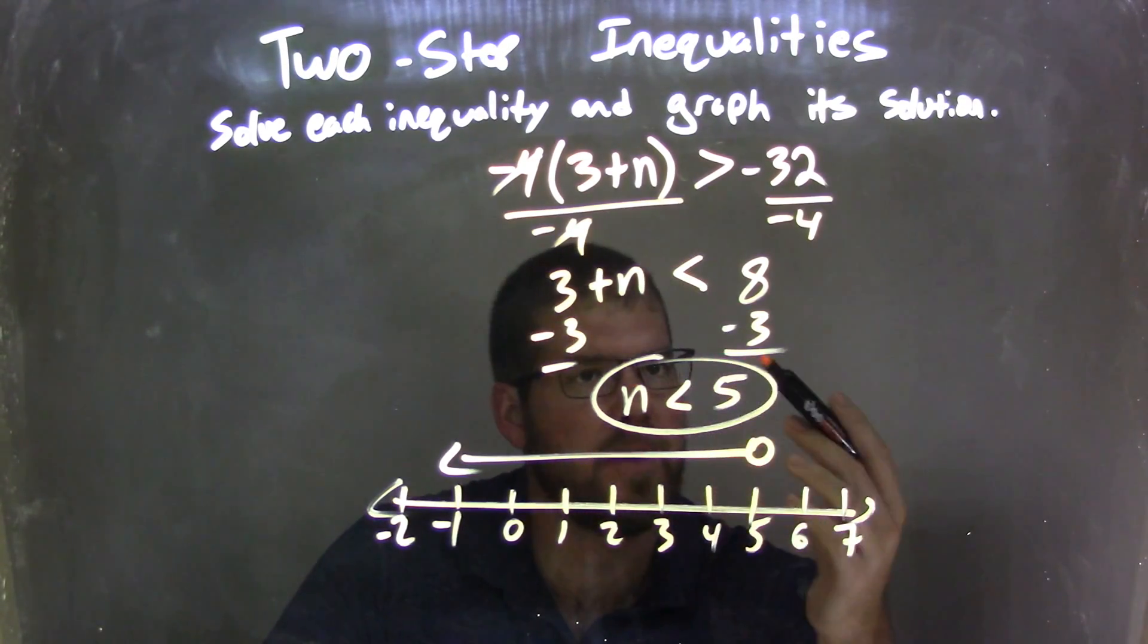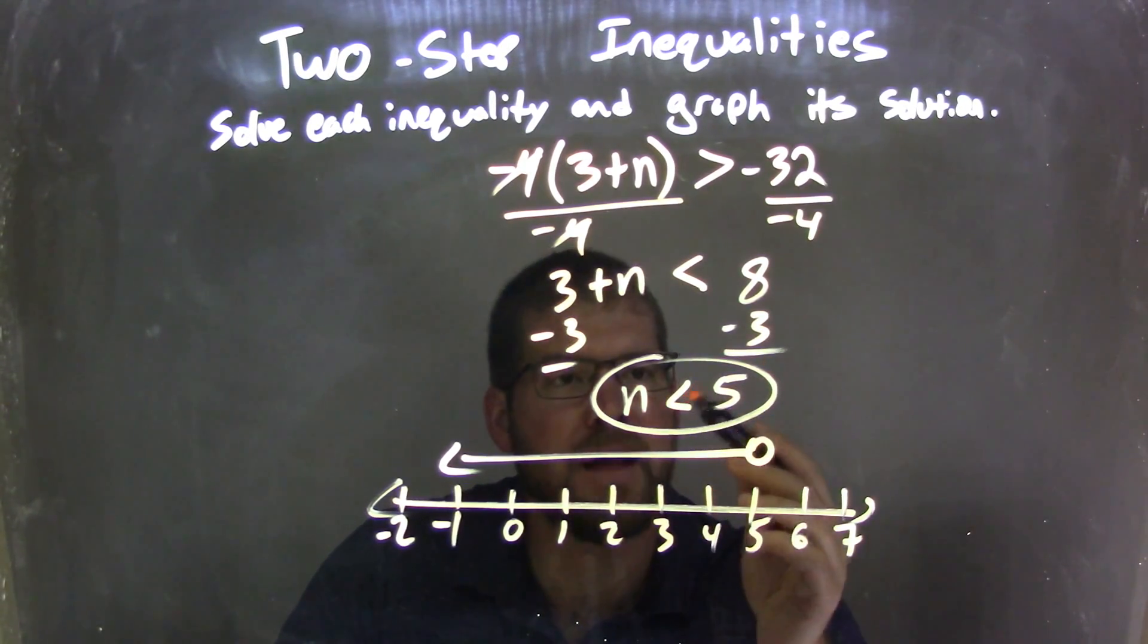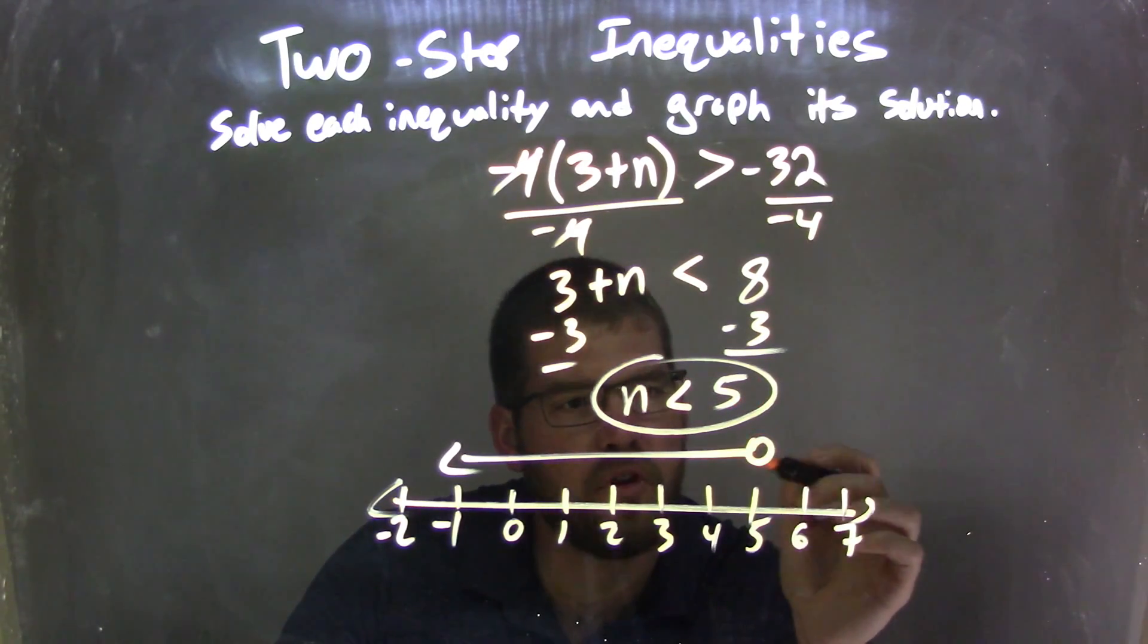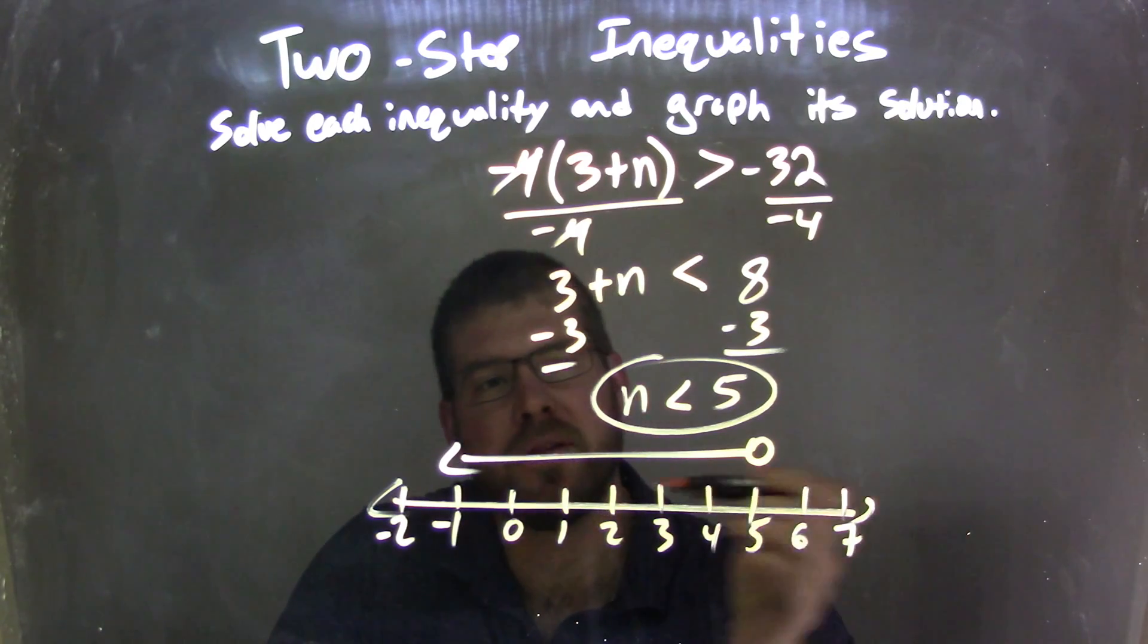I then subtract 3 to both sides, giving me a positive n as less than 8 minus 3, which is 5. I put an open circle at 5 because it's not equal to 5, and then I made my arrow to the left because it's less than 5.